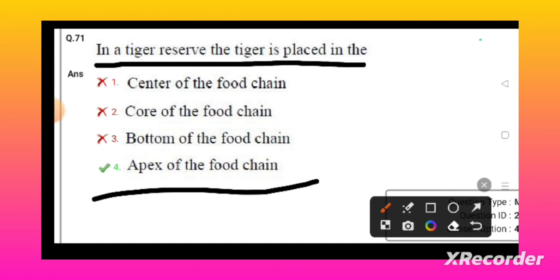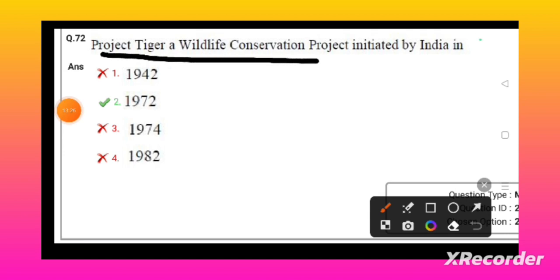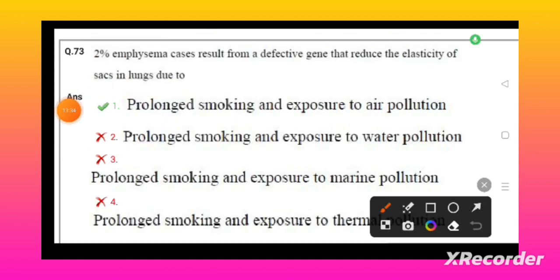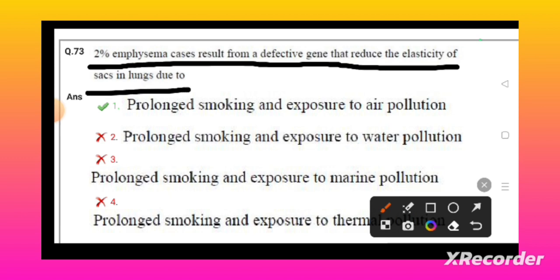The Project Tiger wildlife conservation project was initiated in the year 1972 under the Wildlife Protection Act. Two percent of emphysema cases result from the defective gene that reduces the elasticity of sacs in the lungs, due to prolonged smoking and exposure to air pollution.